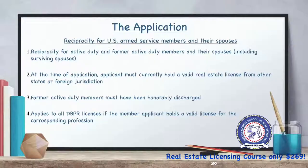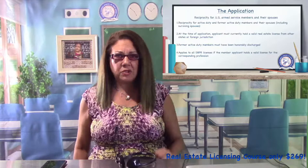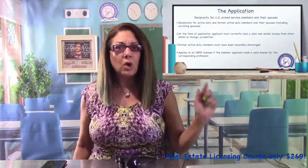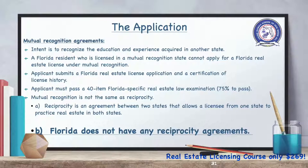Florida grants reciprocity to U.S. armed services members and their spouses. The DBPR will issue a real estate license to active duty and former active duty members and their spouses who hold a valid real estate license from another state. Some states are approved for what's called mutual recognition, where they mutually recognize their real estate schooling and credentials with the Florida Real Estate Commission.